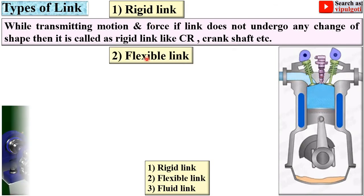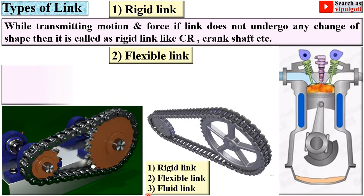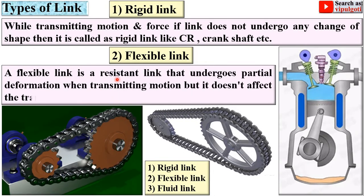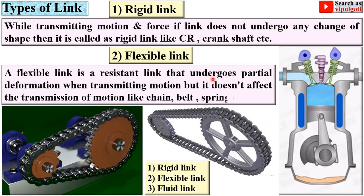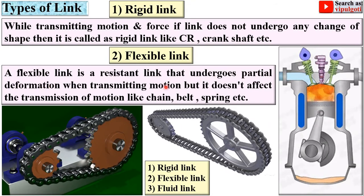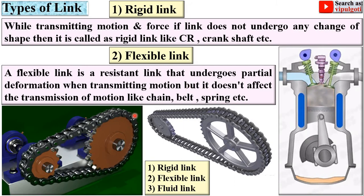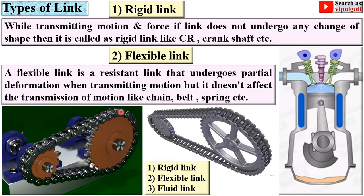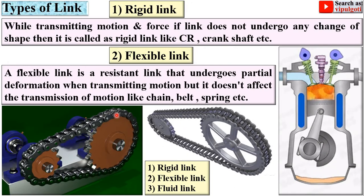Next, flexible link. A flexible link is a resistant link that undergoes partial deformation when transmitting motion. Here you can see there is partial deformation.